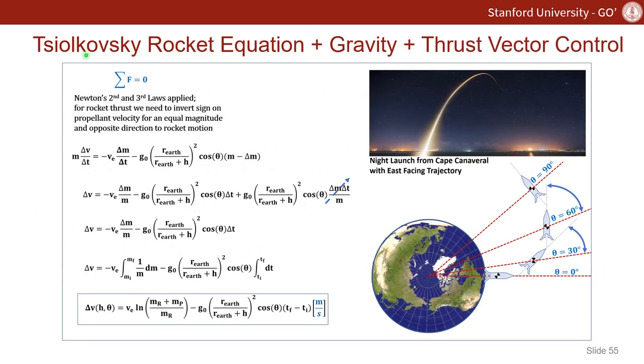It's pretty straightforward to take the Tsiolkovsky rocket equation, add gravity, and a form of thrust vector control or turns. And if we look here, this represents a rocket that would take off from Kennedy Space Center or Cape Canaveral Air Force Station, pointing upwards at zero degrees and actually go through turns as it goes through altitude to a parking orbit, eventually reaching a 90-degree orientation in a stable parking orbit around the Earth.